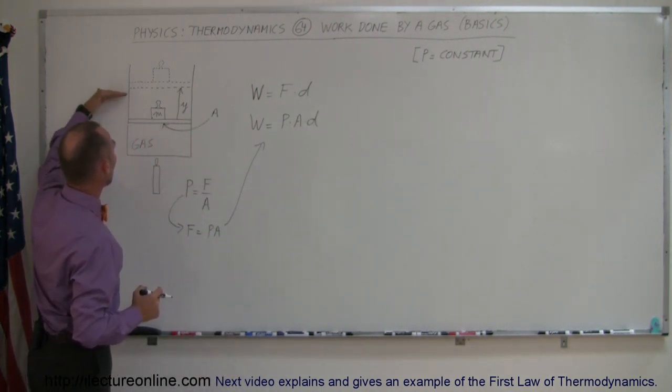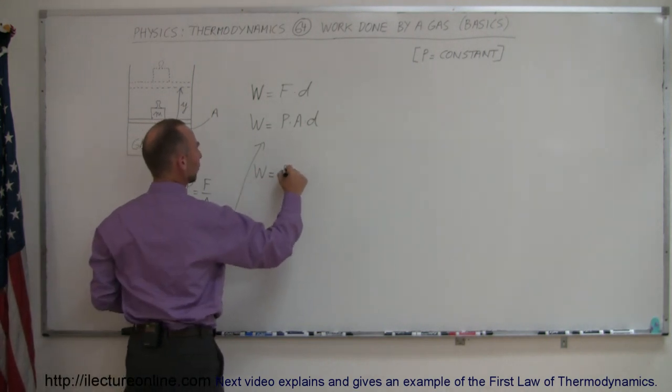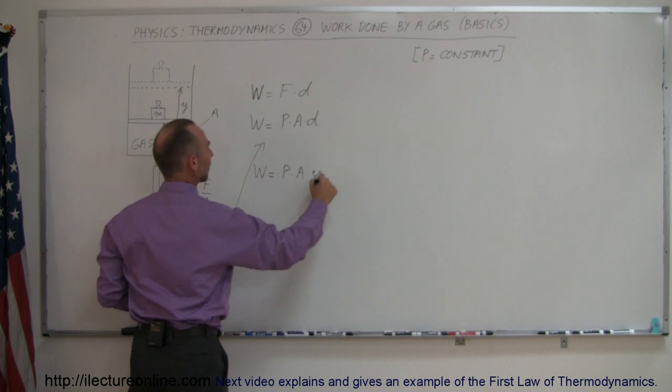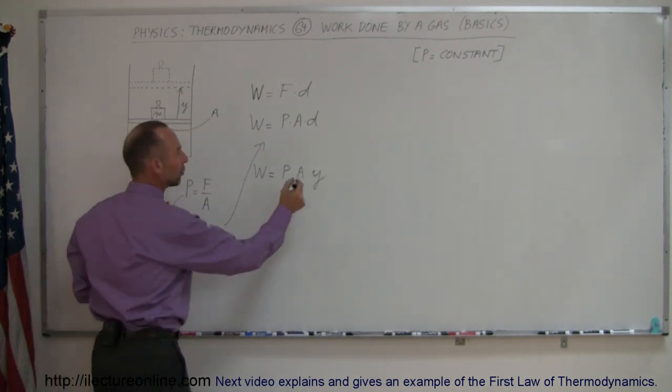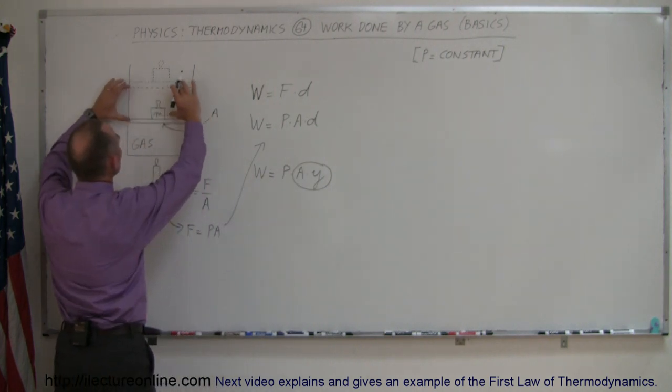The distance, y, went from here to there. So the work done is equal to pressure times area times the height that the piston gained. The area times the height is equal to the change in volume. That's your delta V.